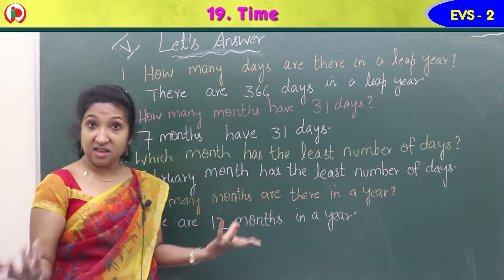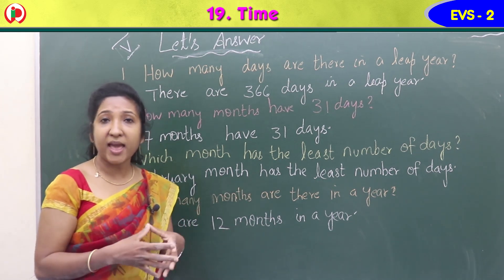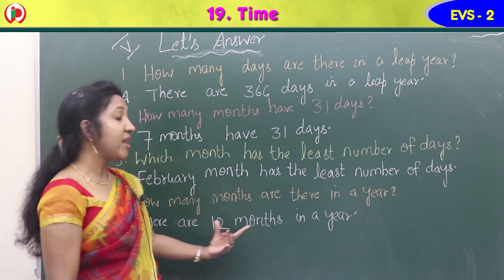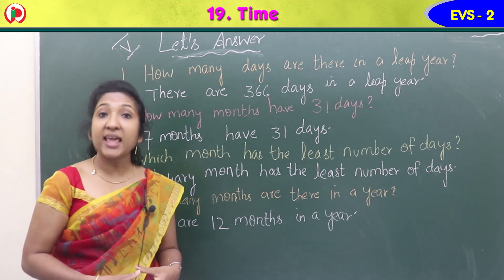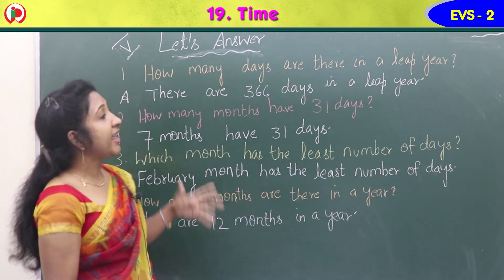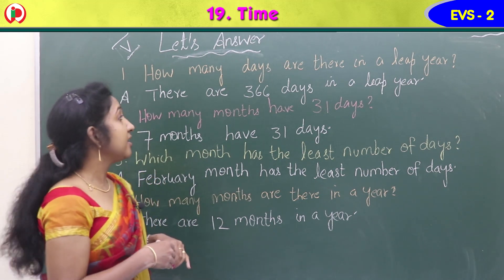Last question: how many months are there in a year? There are 12 months in a year. So the four answers are: 366 days in a leap year; seven months have 31 days; February has the least number of days; and there are 12 months in a year.